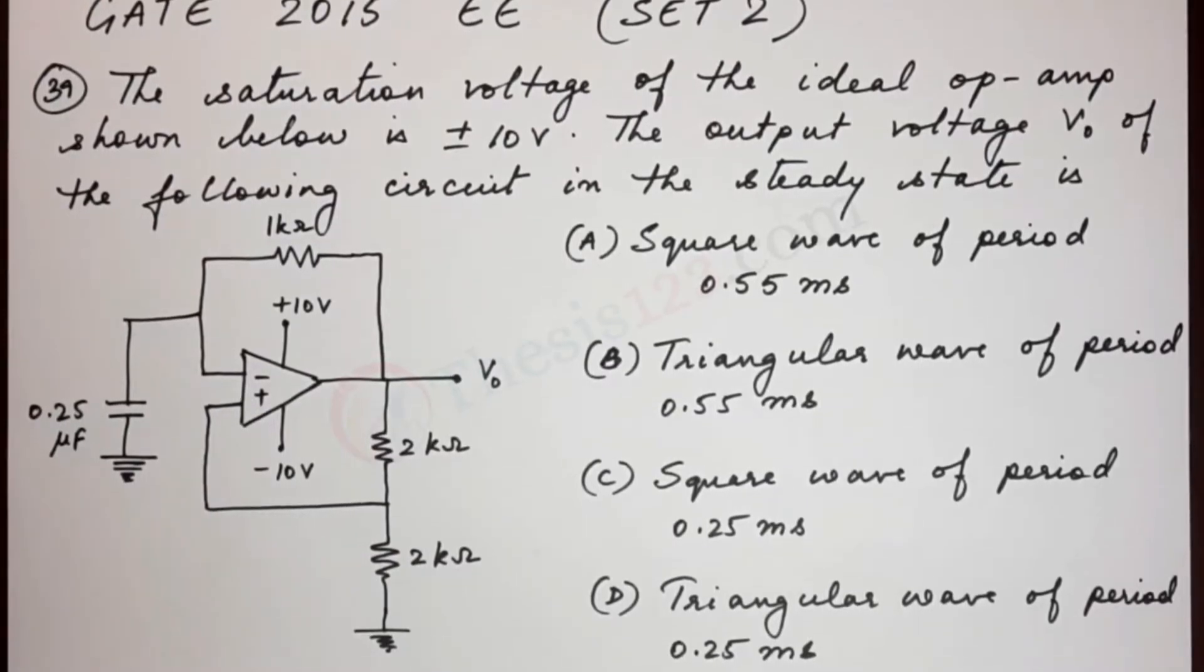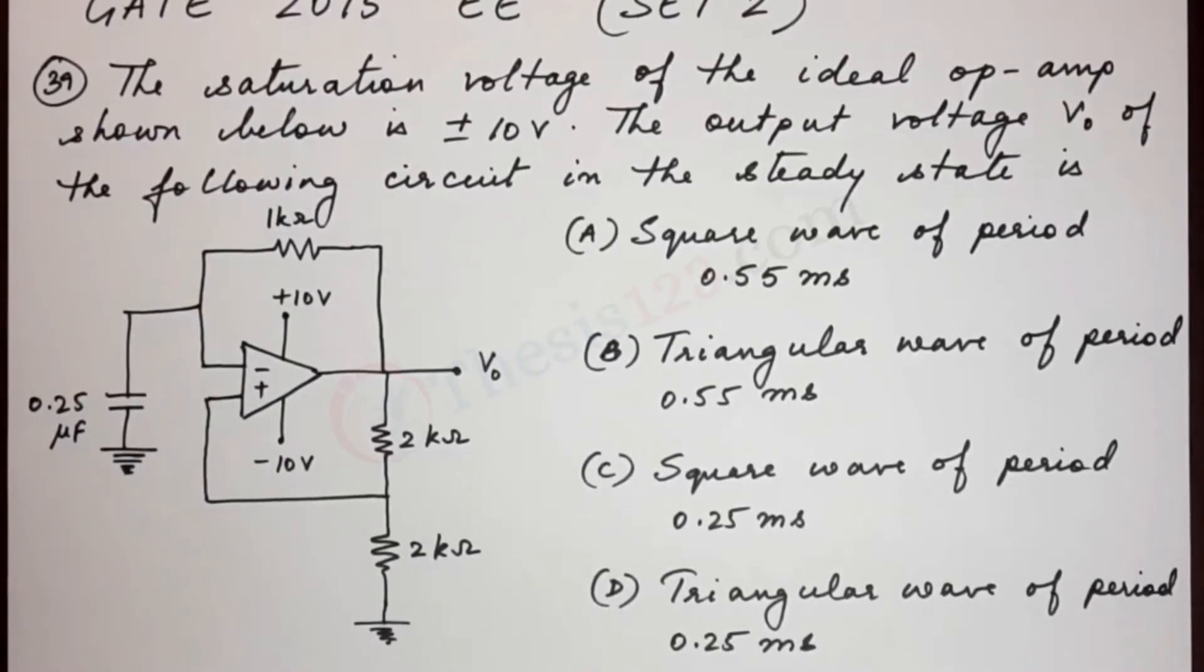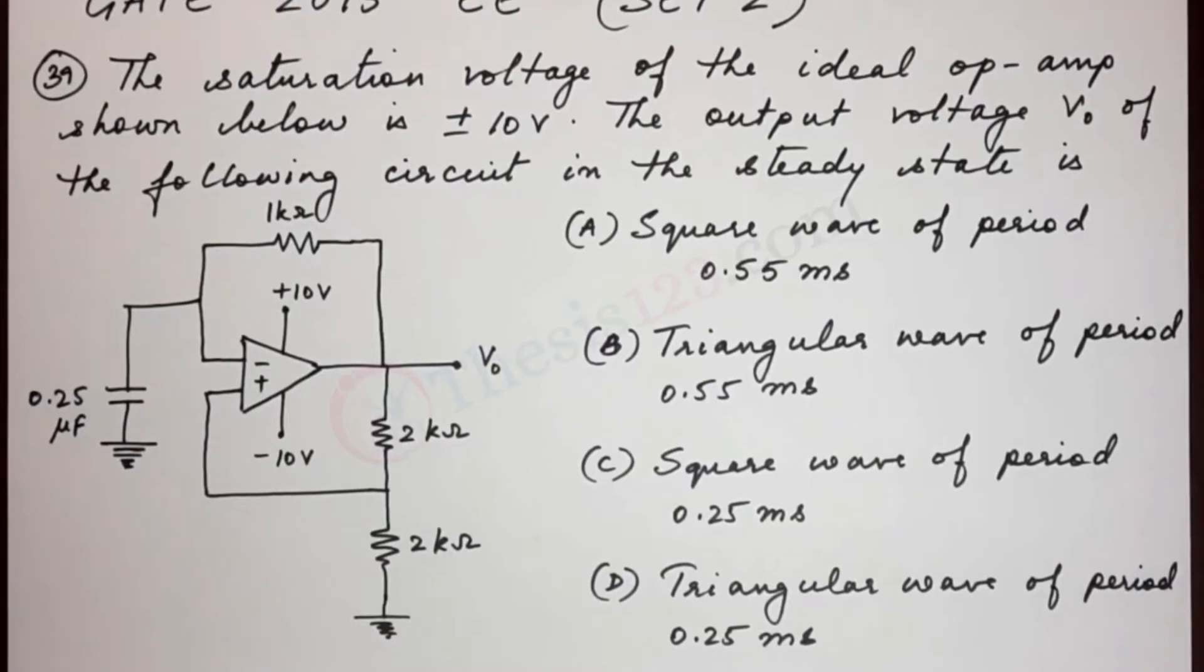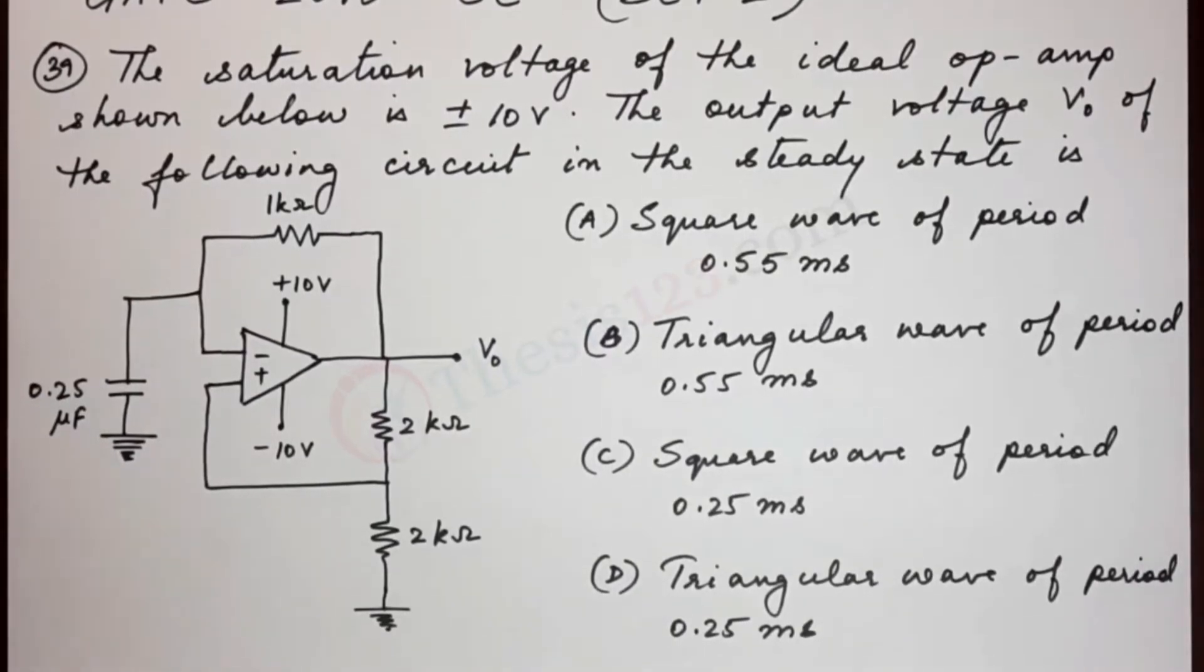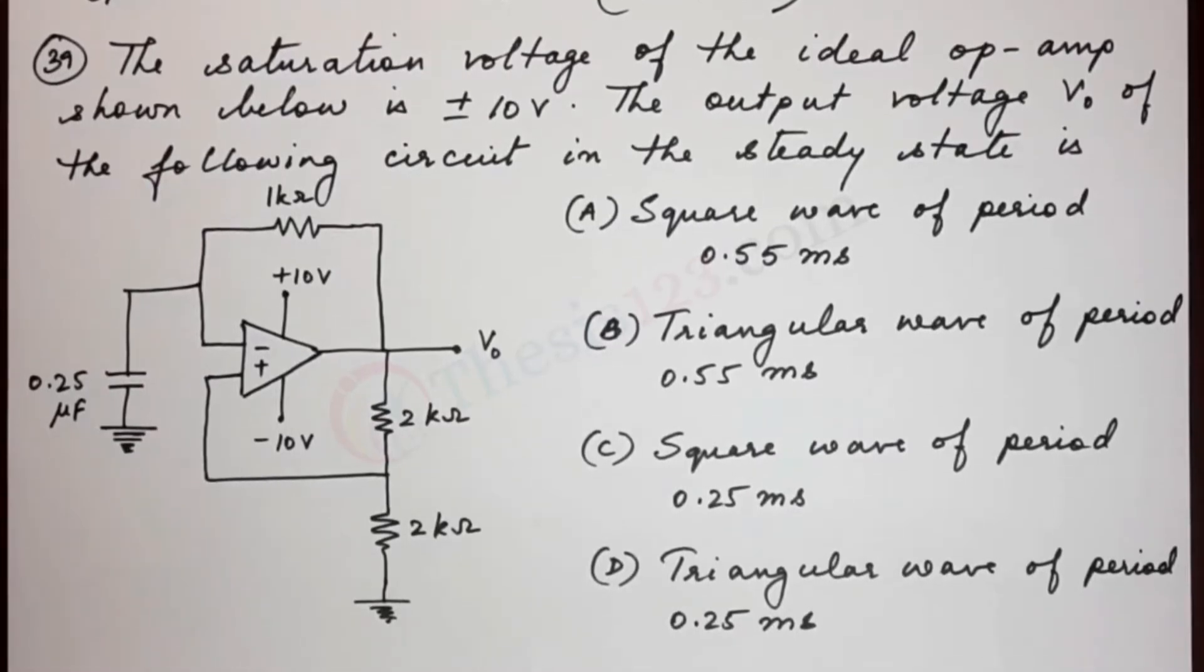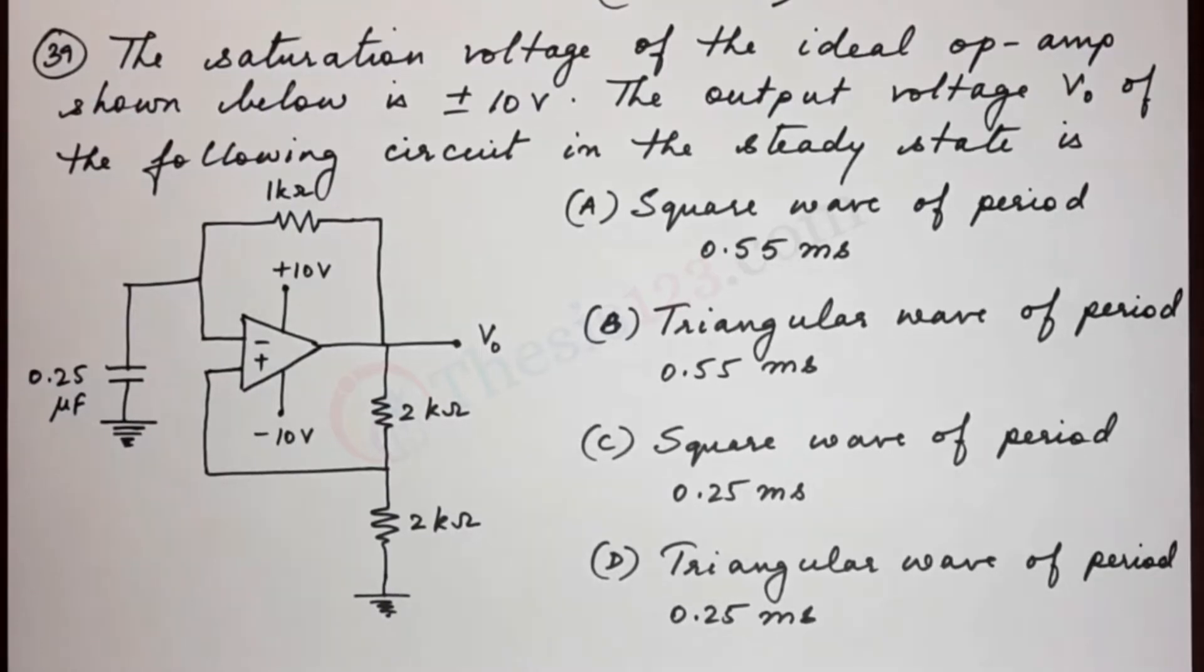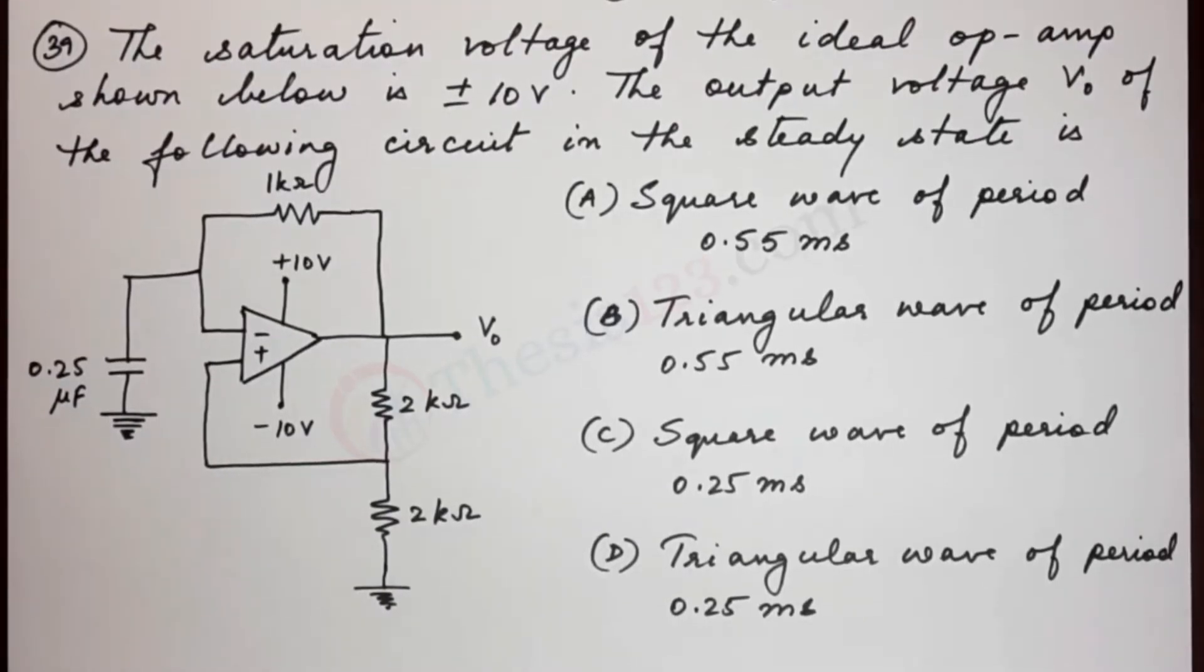Okay, so here we have our diagram given to us and it's been said that it's an ideal op-amp shown. Now what you have to do is look closely at the figure and see what type of op-amp it represents. Once you know which type it is, then you will be able to find out what kind of output waveform it produces.